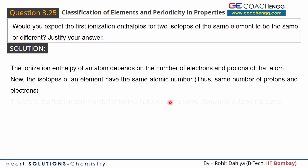From this, we conclude that the first ionization enthalpy for different isotopes of the same element should be the same. Ionization enthalpy should be the same for different isotopes. So this is our required answer.